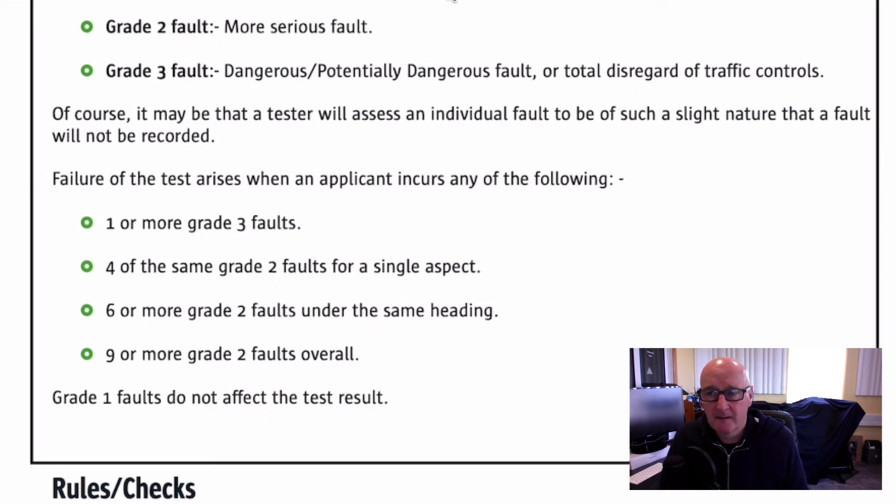So there are the three types of fault: one, two, and three. How many of them can you have before you fail? Now, one or more grade three faults. Okay, so a grade three fault is a potentially dangerous error. There is no way an examiner can give you a driving license if they feel you're dangerous. So once you make a grade three error, that's it. You won't know, but you might have a fair idea.